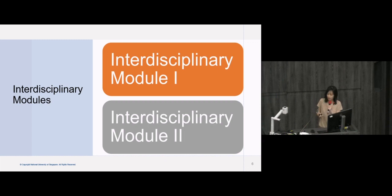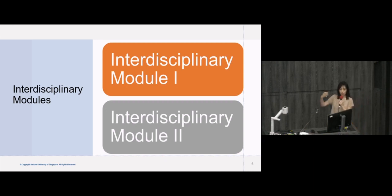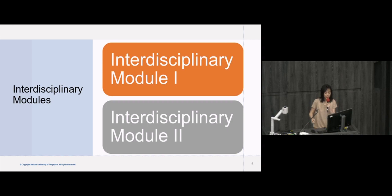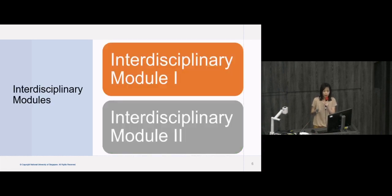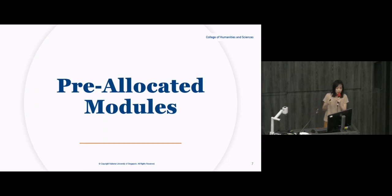In this common curriculum there are two types of modules. For some modules you can select the module you want by yourself. For example, for the interdisciplinary modules, there is a list and you just choose two from the list. For this kind of module you're going to select it on MOTREG. But for other modules such as the design thinking module, there is only one module that satisfies the requirement, so everyone has to take it — and you will be pre-allocated that module in the MOTREG system.